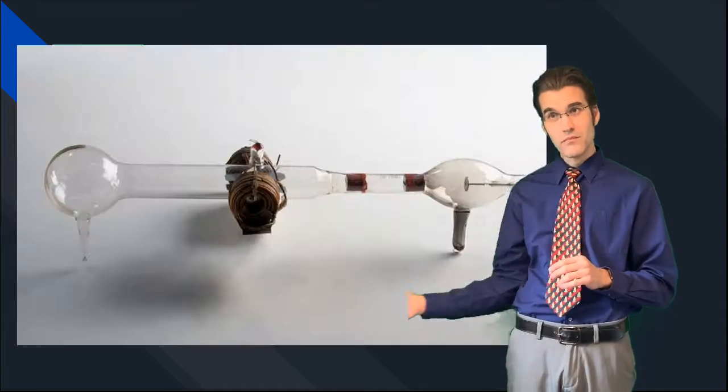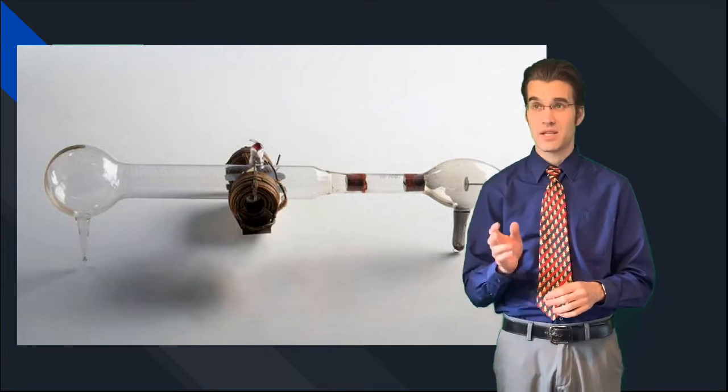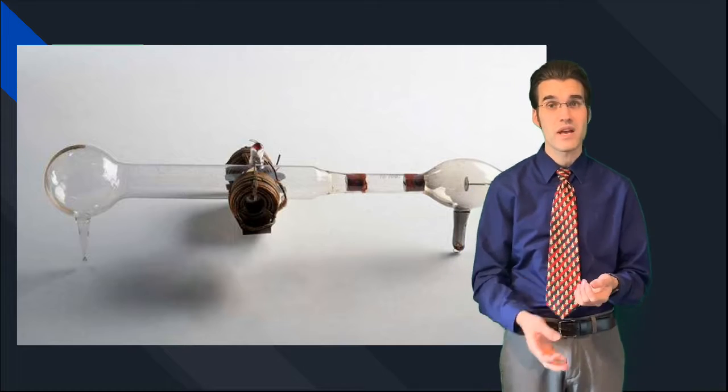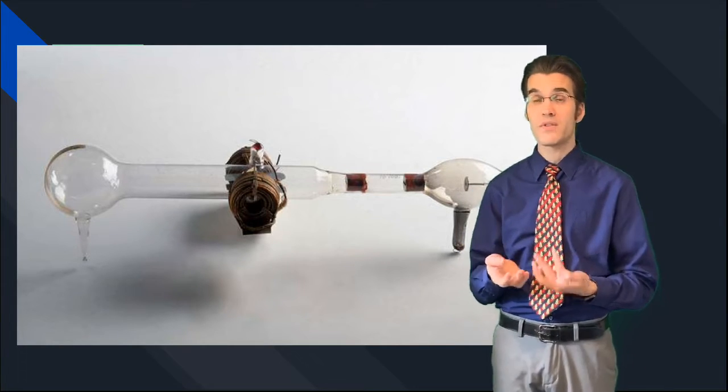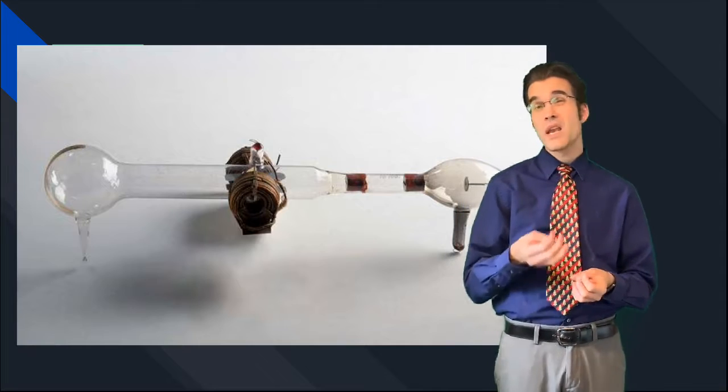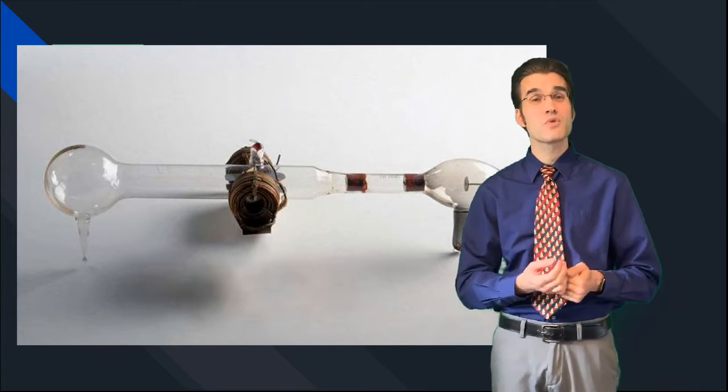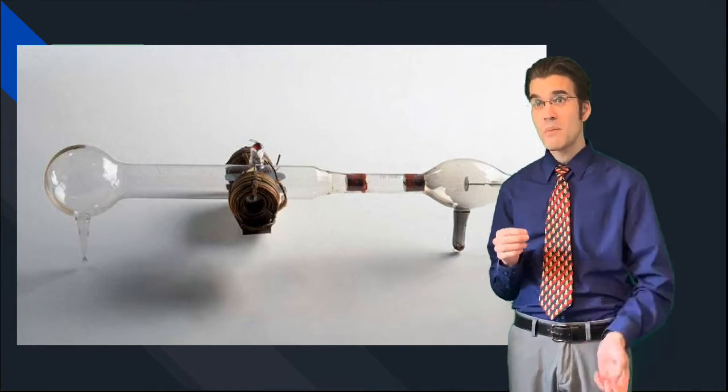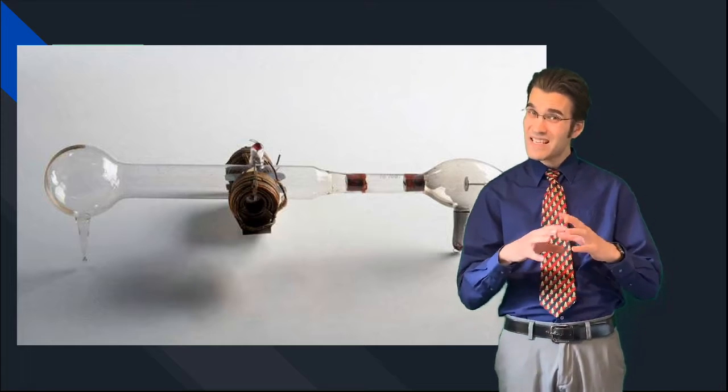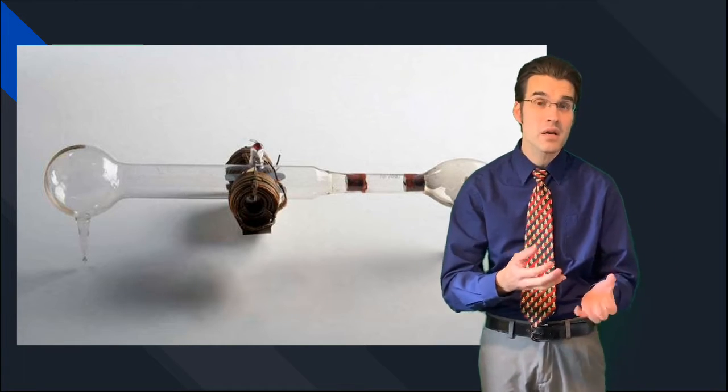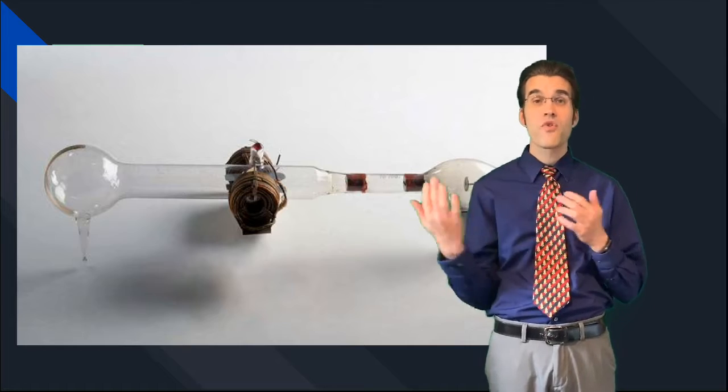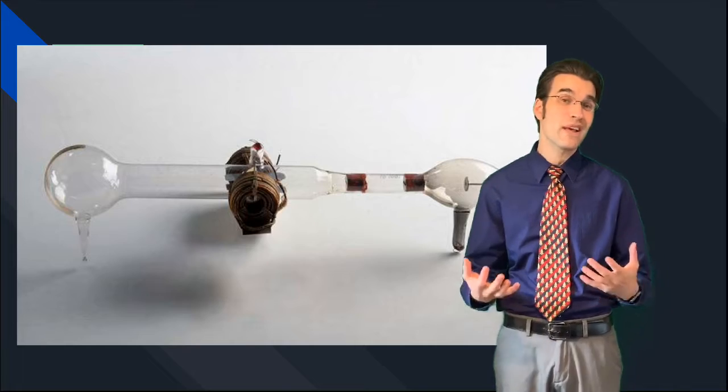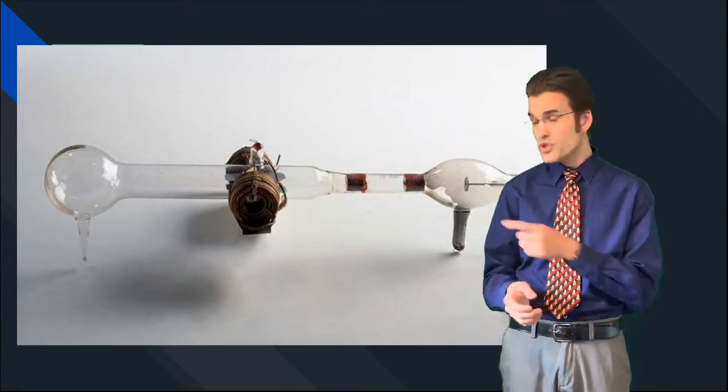That brings us to the cathode ray experiment. This interesting device here is called the cathode ray, and this is a replica of the one that J.J. Thomson used. What's interesting about this is that it also goes back to some of the inventions that Edison used with the vacuum tube, because what was special about this was that inside that glass there was no air. If there's no air, there's no particles for things to bounce off of, and so you could do experiments in what we would call a vacuum.